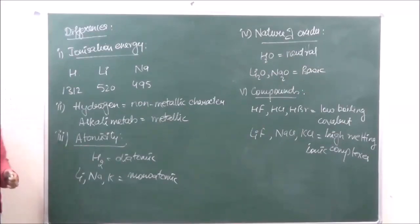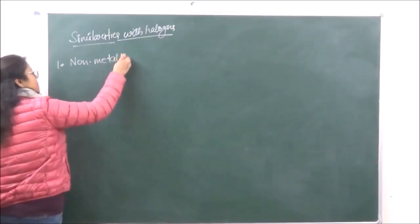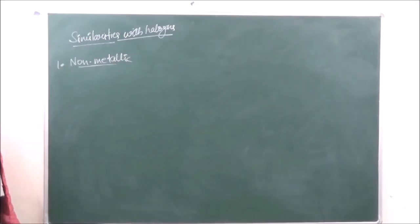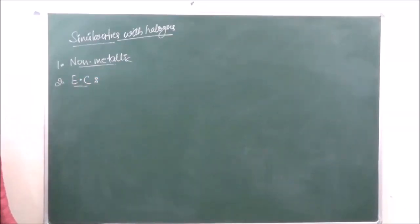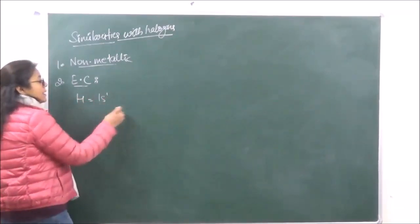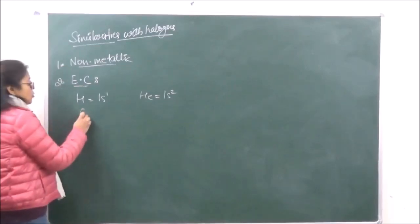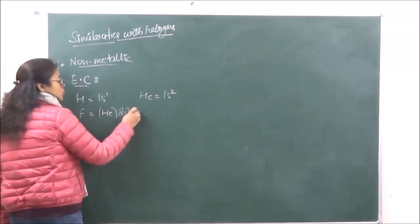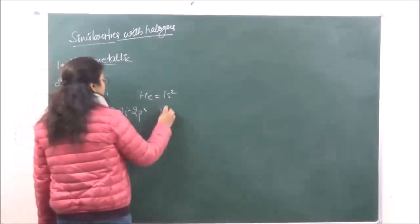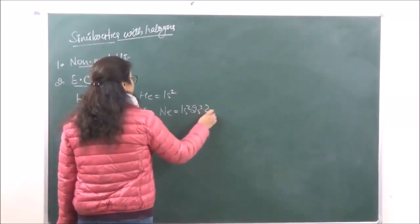Now let's go on to the similarities of hydrogen with halogens. The first similarity is the non-metallic character — both halogens as well as hydrogen are non-metallic. The second similarity is electronic configuration: hydrogen has one electron less than the nearest noble gas (Helium, 1s2), and similarly halogens also have one electron less — for example, fluorine has configuration 2s², 2p⁵, one electron less than neon (1s², 2s², 2p⁶).